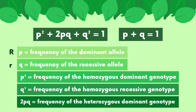Going back to the equations for Hardy-Weinberg Equilibrium: the genotype RR can be represented by p², since that's the homozygous dominant genotype. The genotype rr can be represented by q², since it's the homozygous recessive genotype. And lastly, the heterozygous genotype Rr can be represented by 2pq.